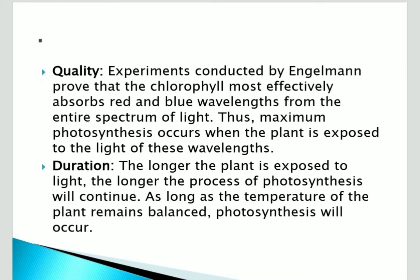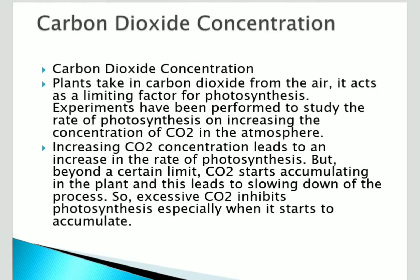The third attribute is duration. The longer the plant is exposed to light, the higher the rate of photosynthesis. However, there is an optimum level — beyond this the photosynthesis does not take place, and below this also photosynthesis does not take place. Plants require optimum sunlight.